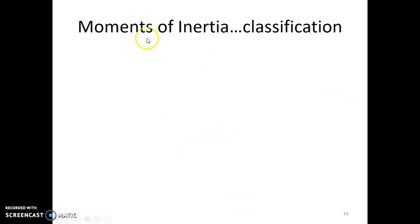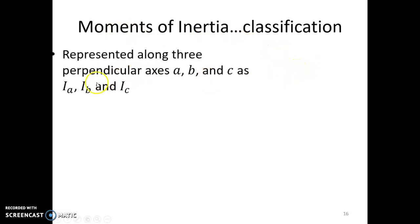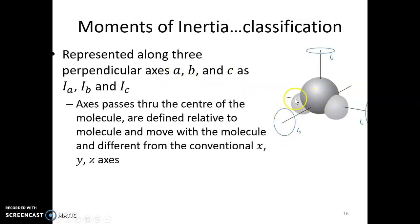The moment of inertia is often used to classify molecules into different types. The classification is based on its resolution along three perpendicular axes a, b, and c. These axes are present in the molecule. They are within the molecule. They pass through the center of motion, the center of gravity of the molecule, and they are different from x, y, and z axes, which are the lab reference coordinate system. The axes a, b, and c move with the molecule. So if the molecule rotates, the axes rotate. The x, y, and z axes do not rotate.